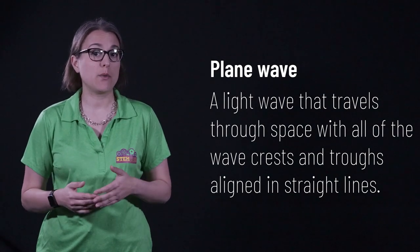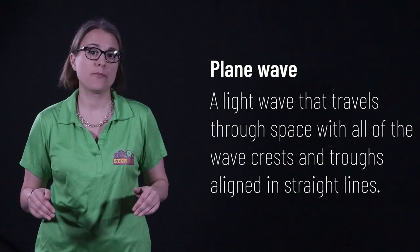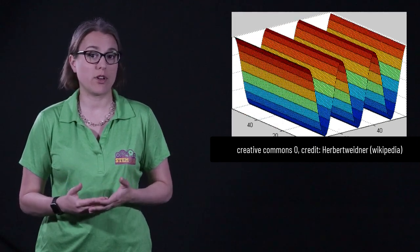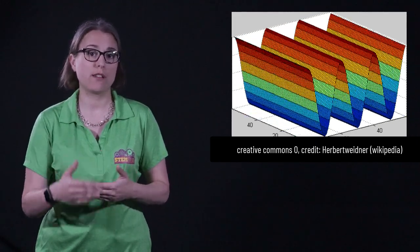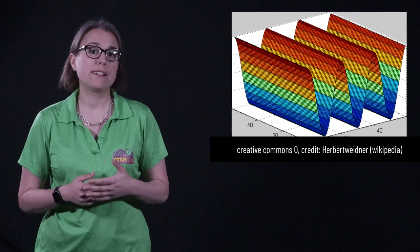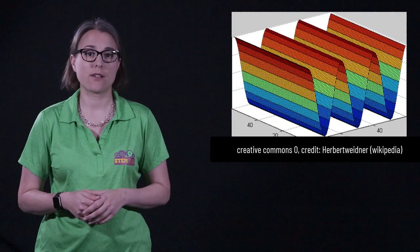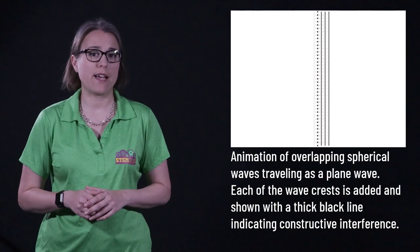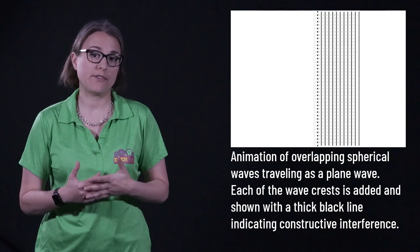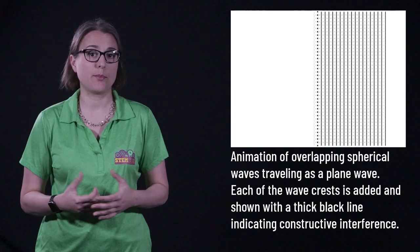For example, a plane wave is a light wave that travels through space with all of the wave crests and troughs aligned in straight lines. If we want to draw a plane wave, we can draw a line where the wave crests are and note that they form parallel lines in space. A plane wave is a very simple type of wave to analyze mathematically and is a nice approximation that physicists and engineers can use in optics calculations. Huygens' principle says that we can represent each point on each wave crest in the plane wave as a spherical wave. The interference of those spherical waves causes what we see as a plane wave.